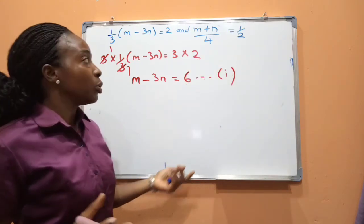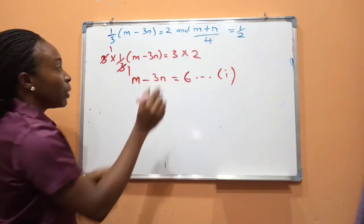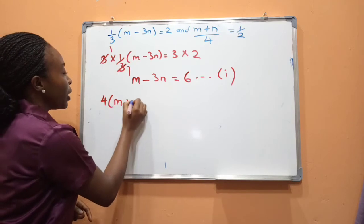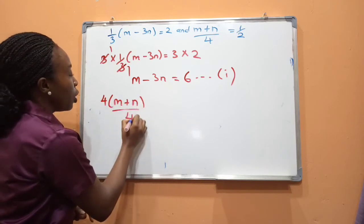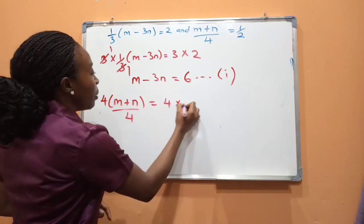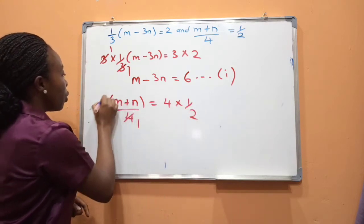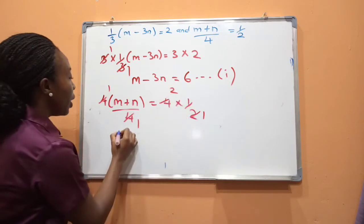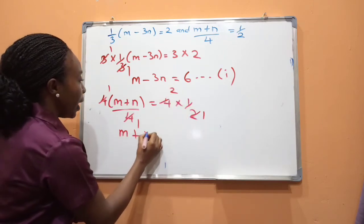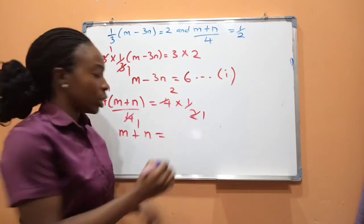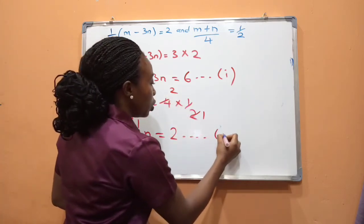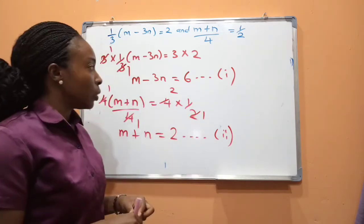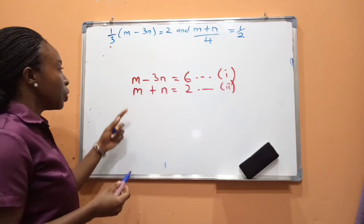For the second equation, the denominators are 4 and 2, so the LCM is 4. Multiplying each term by 4: 4 × (m) + 4 × (n/4) = 4 × (1/2). Simplifying: 4÷4 = 1 and 4÷2 = 2. So we get m + n = 2 — equation 2.